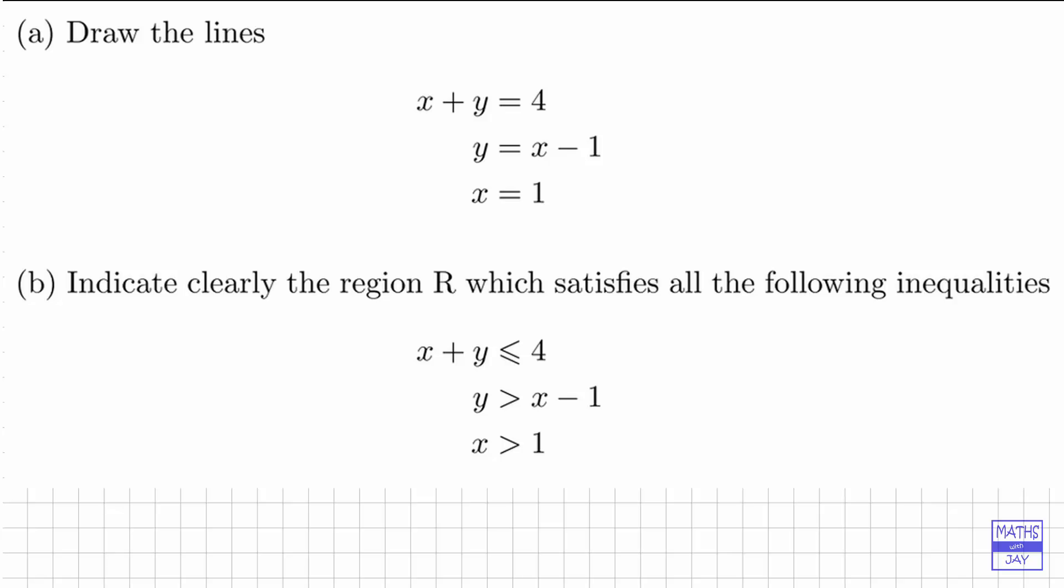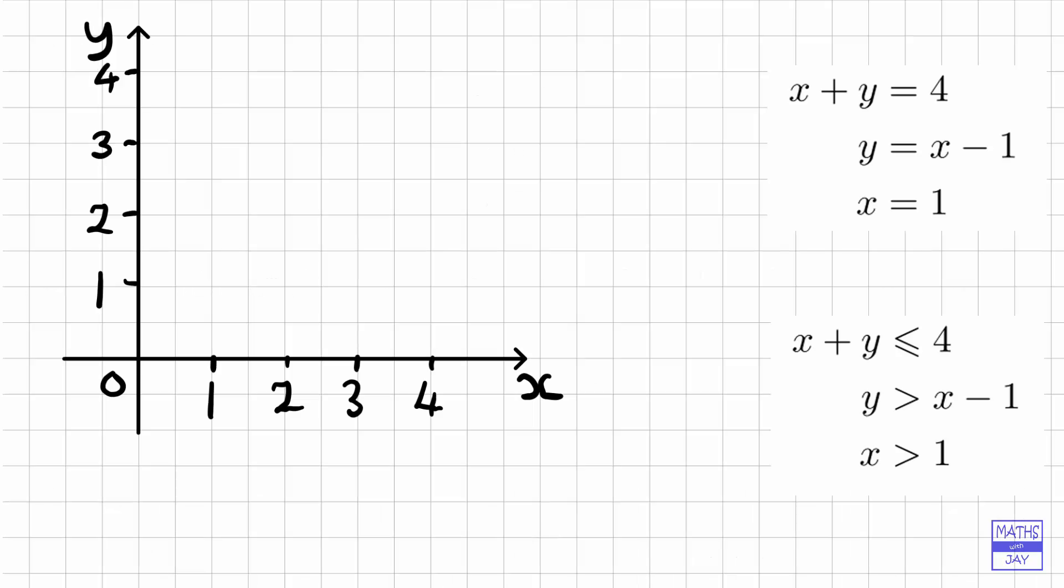Let's give ourselves some more space and start by looking at the first line we want to draw, x plus y equals 4. One way of thinking about this is that whenever we've got x plus y equal to something, we're just going to be joining the points on the axes 4 to 4, because when x is 4, y is 0 and the other way around when y is 4, x is 0.